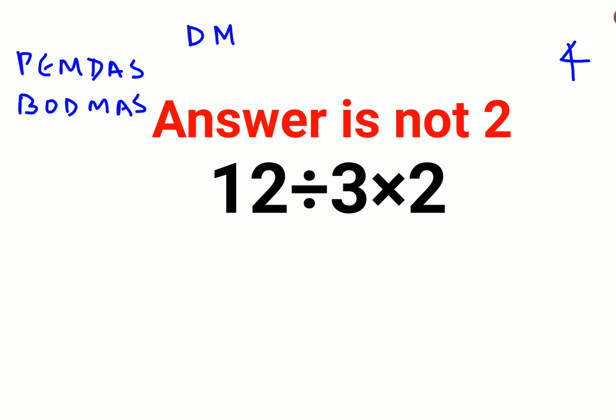If you do PEMDAS, we need to do multiplication first. So 12 divided by 3 times 2, which is 6, and then the answer comes out to be 2.